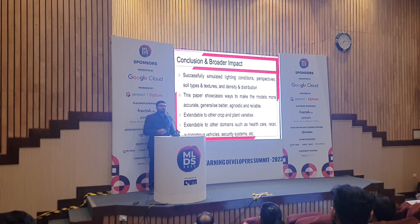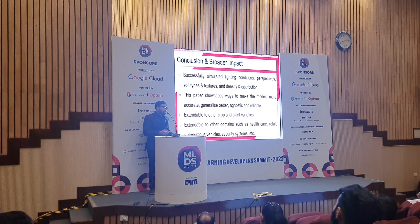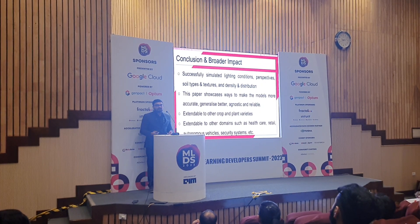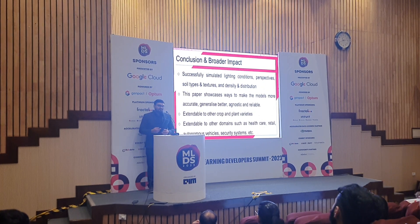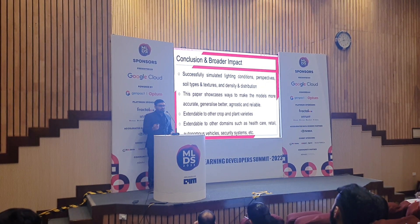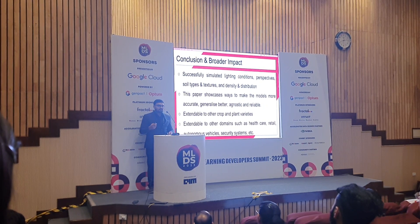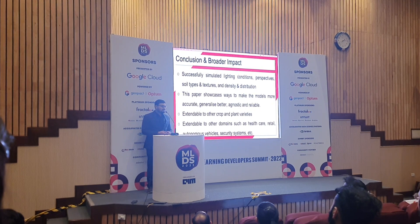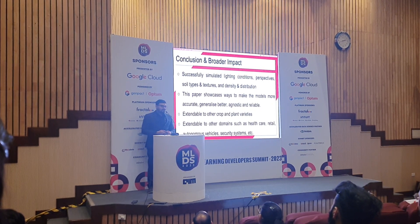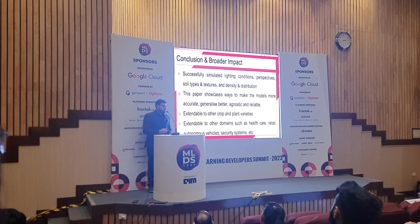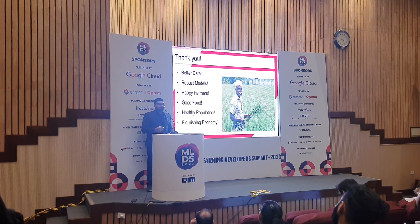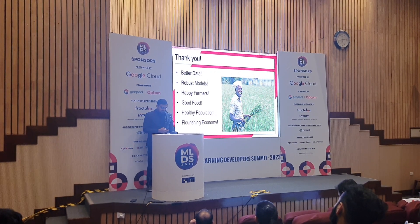In conclusion, with all the approaches implemented, we successfully simulated different lighting conditions, perspectives, soil types and textures, crop density and distribution, and different stages in the growth cycle. This paper showcases ways to make models more accurate, generalize better, be agnostic to different variables, and be more reliable. The approaches can be extended to other crop types, plant varieties, and domains like autonomous vehicles, security systems, healthcare, and retail. Better data leads to a robust model, translating to happy farmers, good food, a healthy population, and a flourishing economy.